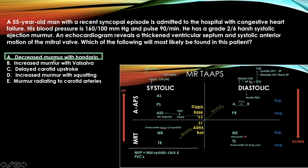The answer is decreased murmur with hand grip. You need to identify that this patient has hypertrophic cardiomyopathy — given away by a thickened ventricular septum on imaging. Though hypertrophic cardiomyopathy typically presents in a young athlete, this 55-year-old with a thickened ventricular septum is still the same condition. On the chart: hypertrophic cardiomyopathy = high pitch, decreased with hand grip.